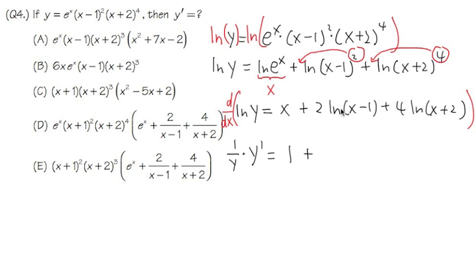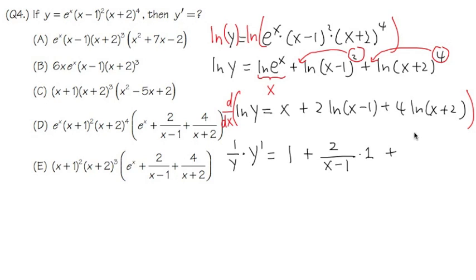The derivative of 2 times ln of x minus 1 is 2 over x minus 1. You should always check what's inside — since the inside is just x minus 1, its derivative is 1, so chain rule doesn't change anything here, but always check. For the third part, the derivative of 4 ln of x plus 2 is 4 over x plus 2, multiplied by 1 since the derivative of the inside is also 1.